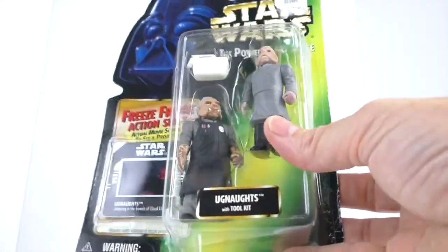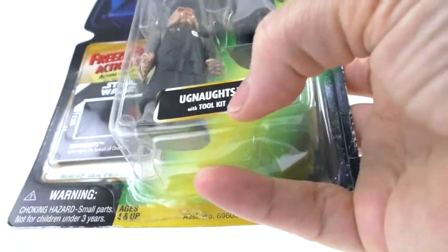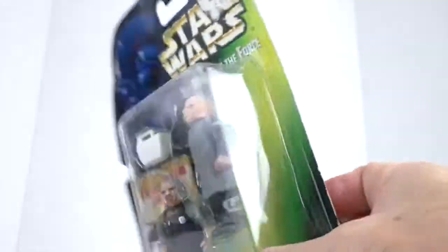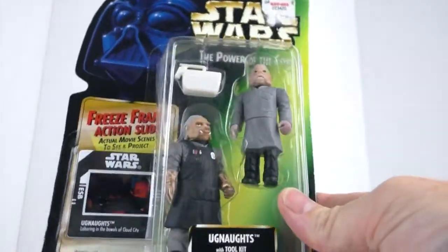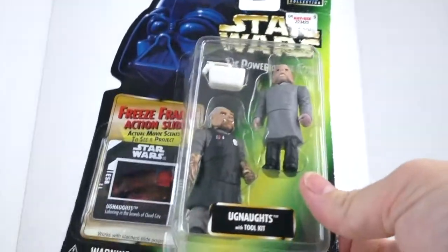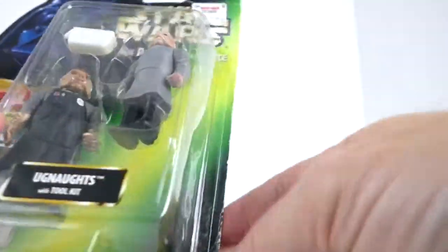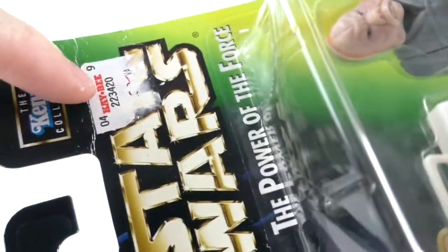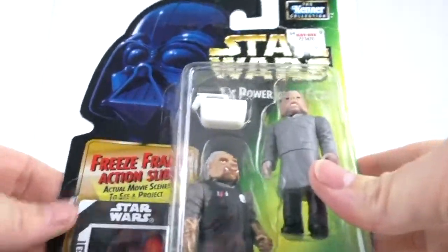I think it's really cool. I would say Kenner should have done that with the original Jawas and Ugnaughts. But it says Ugnaughts with toolkit, so it's one toolkit so they have to share. This is the collection 2 set.